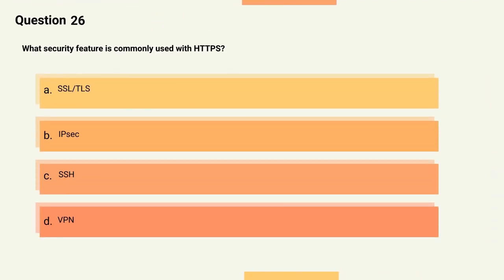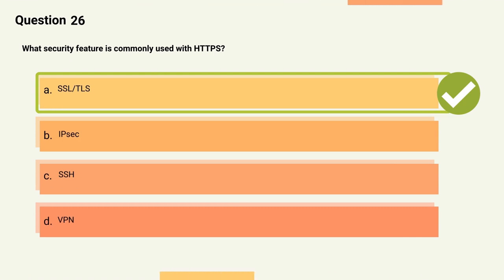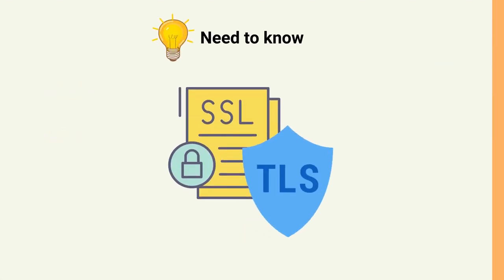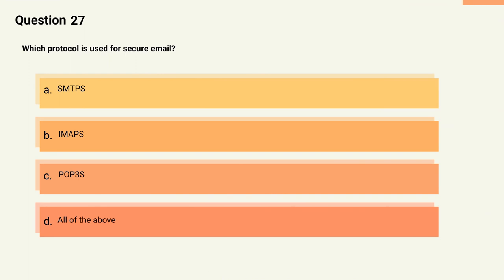Question 26: What security feature is commonly used with HTTPS? Options: A) SSL/TLS, B) IPSec, C) SSH, D) VPN. The correct answer is Option A, SSL/TLS. Explanation: HTTPS uses the SSL/TLS protocol to encrypt web traffic and provide security for sensitive information such as login credentials and financial transactions.